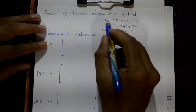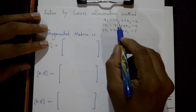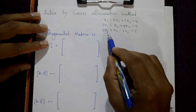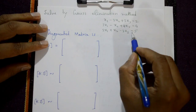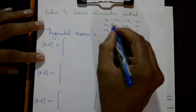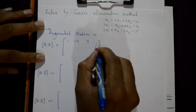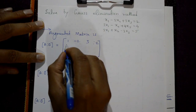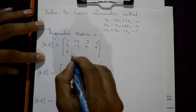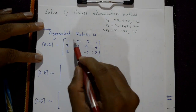Next example: solve by the Gauss elimination method with three equations and three unknowns. x₁ - 2x₂ + 3x₃ = 2; 3x₁ - x₂ + 4x₃ = 4; 2x₁ + x₂ - 2x₃ = 5. Write the augmented matrix with coefficients: row 1 [1, -2, 3 | 2], row 2 [3, -1, 4 | 4], row 3 [2, 1, -2 | 5]. The leading element is 1; the elements below are 3 and 2, which we will make 0.